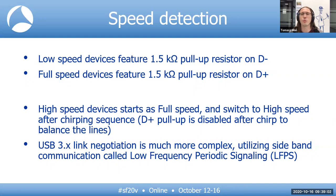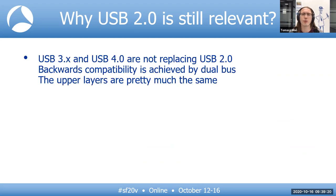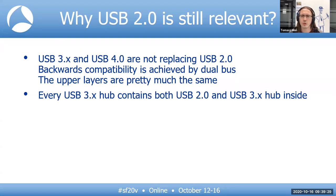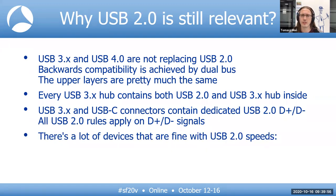All speed detection happens at the hardware level and you won't see that in Wireshark at all. With USB 4 devices coming soon, you might wonder if it's still worthwhile to get familiar with USB 2.0 — the answer is definitely yes. USB 2.0 is not going anywhere; backwards compatibility is achieved by dual bus and the upper layers are pretty much the same. Every USB 3.0 hub contains both a USB 2.0 and USB 3.0 hub inside it. All new connectors, including USB Type-C, contain dedicated USB 2.0 D-plus and D-minus signals. There are many devices that are fine with USB 2.0 speeds, like keyboards, mice, or controllers — the Nintendo Switch Pro controller has a USB Type-C connector but is in fact a full-speed device.